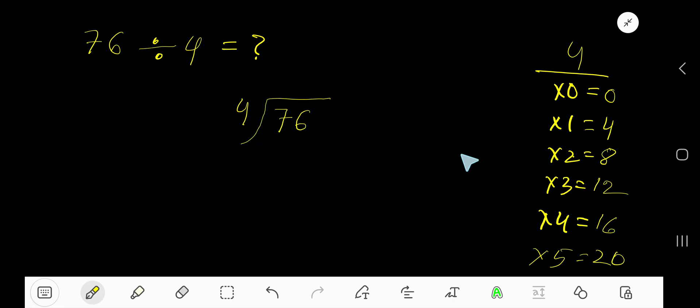4 goes into 7 how many times? 2 times 4 is 8, which is greater, so 1 time. 1 times 4 is 4. Subtract, you are getting 3.